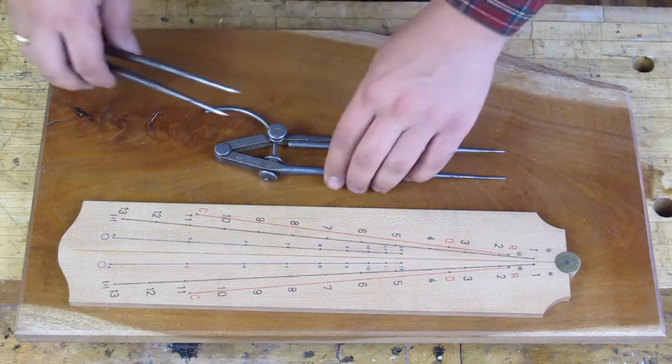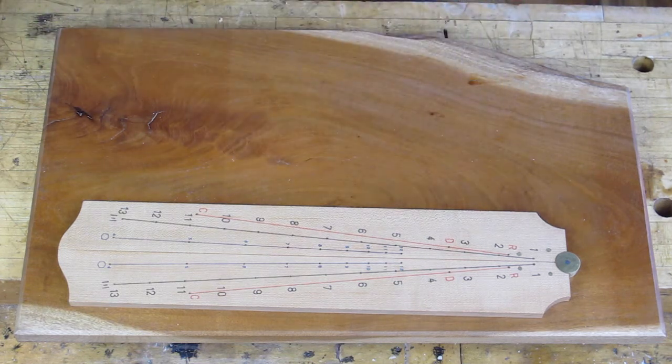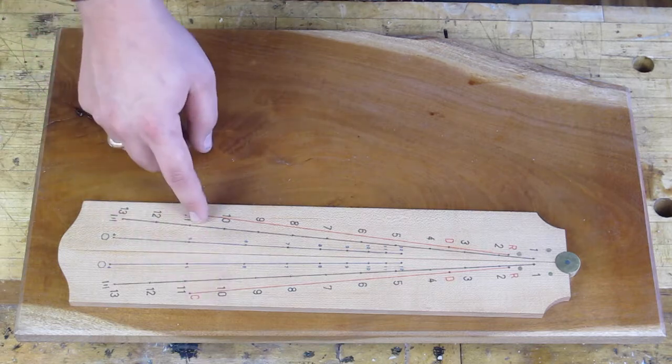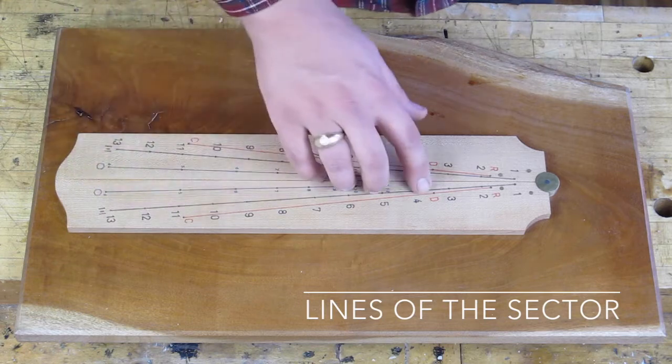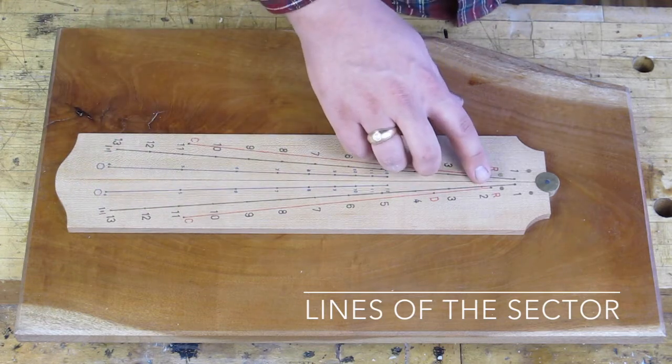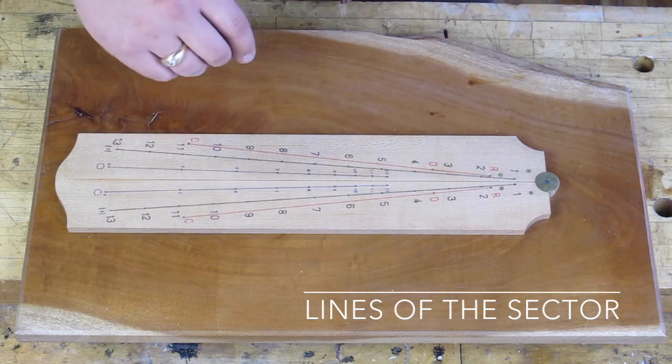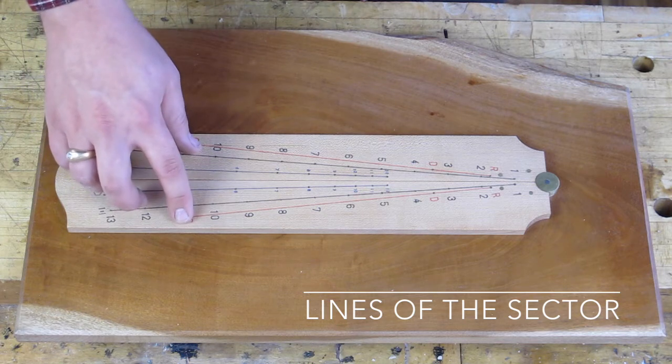There are three lines that are on the surface of this tool, and they're in three different distinct colors. The red line is the line of circles, and you'll see it's labeled C, D, and R. We're going to use that to get radius, diameter, and circumference from given any one of the three.